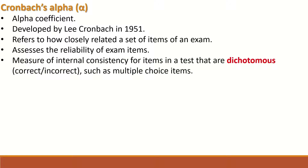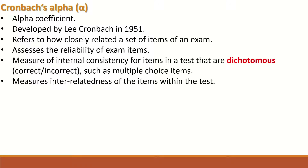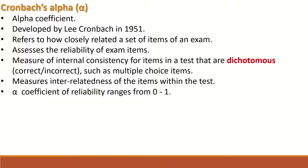It measures the internal consistency of items in a test that are dichotomous — i.e., correct or incorrect — such as multiple choice questions. Alpha measures the interrelatedness of items within the test, and the alpha coefficient of reliability ranges from zero to one.